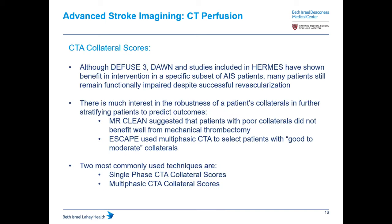There is growing data suggesting that not just infarct size and penumbra are important in determining outcomes. DIFFUSE 3 and DAWN included patients who showed some improvement, but many remained functionally impaired despite successful revascularization. There's now significant interest in collateralization — how good are your collateral vessels — and how that might impact revascularization outcomes. MR CLEAN suggested that patients with poor collateral flow do not benefit well from mechanical thrombectomy.